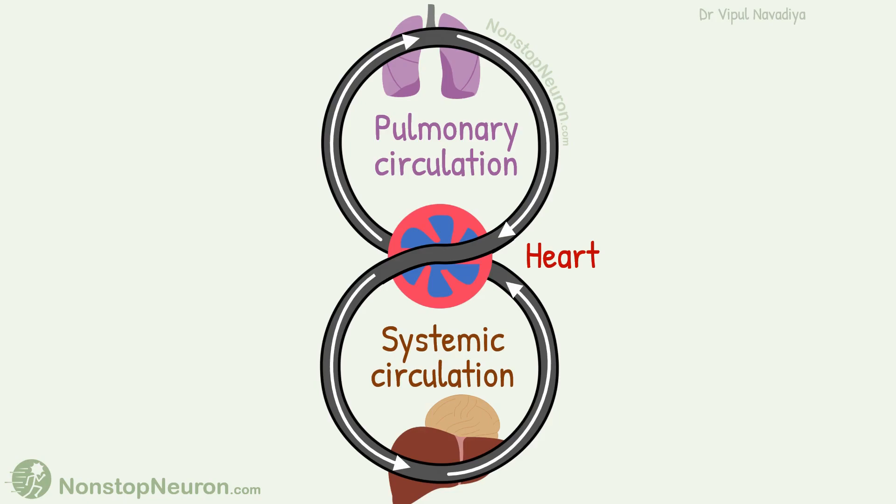Thus, during each loop, the blood passes two times through the heart, one time through the lungs, and one time through the systemic circuit. This is the most simplified and the easiest way to draw the circulation of blood.